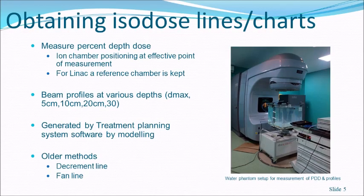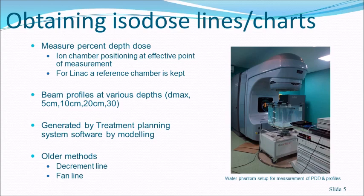For obtaining isodose lines and charts, you need a water phantom in which an ion chamber can be moved in x, y, and z directions remotely for measurement of depth dose and beam profiles. A reference ion chamber is also required. For LINAC, the ratio of the measurement chamber to the reference chamber is plotted for depth dose and beam profiles. Beam profiles should be measured at D-max, 5, 10, 20, and 30 centimeters. Present-day treatment planning systems use these data to model the dose distribution.